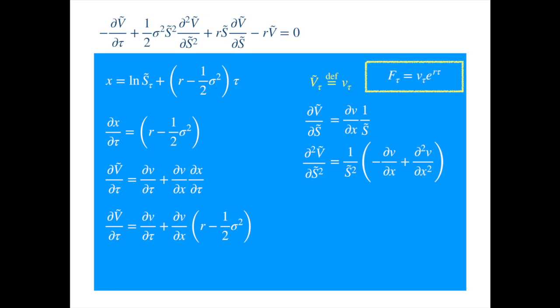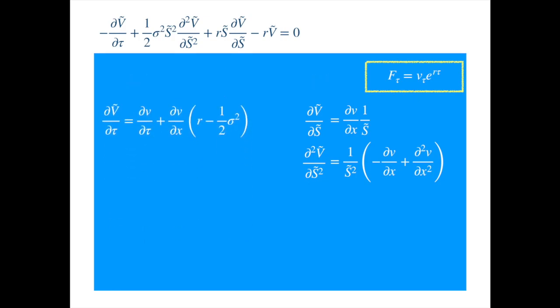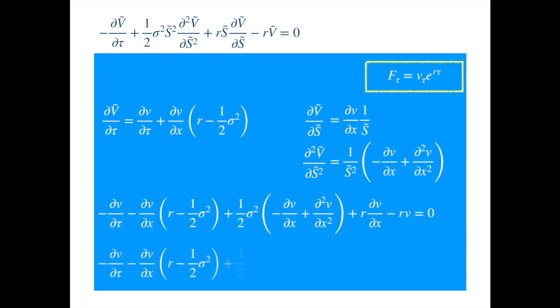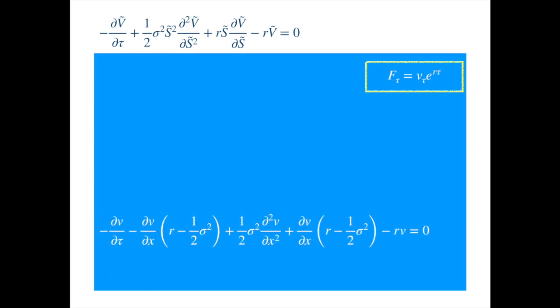Now, we have all the derivatives. So, we can plug these into the PDE. Where we had cancelled the s and s squared terms. Now, we rearrange the third and fourth terms to isolate the first and second derivative terms. The second and the penultimate terms cancel. And we are left with a simpler expression. We move on to the final transformation.